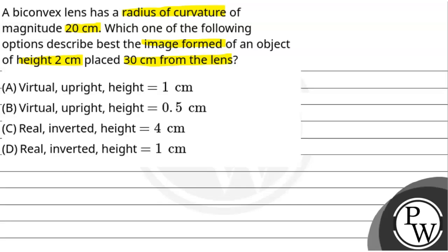So basically, we are saying that it is a biconvex lens with a radius of curvature, a height of the object, and a distance. We are saying that four options are given, so let's talk about this.